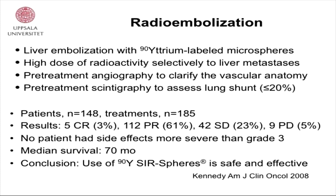A few words about radio embolization — liver embolization with yttrium-90 labeled microparticles — which delivers a high dose of radioactivity to liver metastases. You must perform angiography beforehand to clarify the vascular anatomy and a scintigraphy to assess the lung shunt, because the particles should go to the tumors, not to the lung. A study from the United States showed a partial response rate of about 60%, another 25% stable, no patients with more than grade 3 toxicity, and a median survival of 70 months. The conclusion was that yttrium-90 radioembolization is safe and effective.